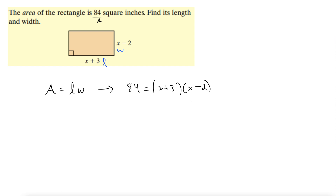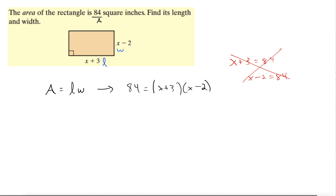Now this is the equation we can solve. A common mistake here — what I'm doing in red is not what you should do. You might say x plus 3 equals 84 or x minus 2 equals 84. That does not work. That only works when we have a 0 over here, but we have an 84 there. So we need to get a 0 on one side or the other.